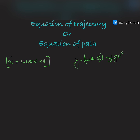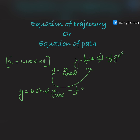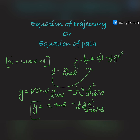To establish the relationship between x and y, we must eliminate the third variable, time. From x = u·cos θ·t, we get t = x / (u·cos θ). Substituting into the y-equation: y = u·sin θ · (x / u·cos θ) − ½g · (x / u·cos θ)². Simplifying, y = x·tan θ − gx² / (2u²·cos²θ). This is the general equation of the path of projectile motion.